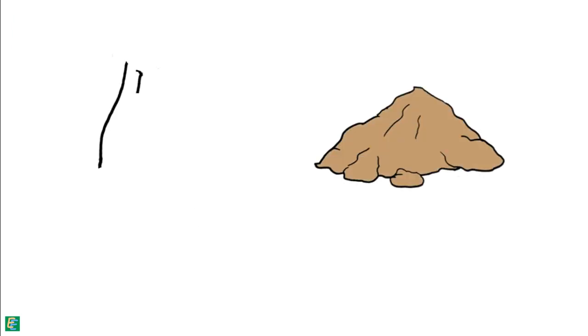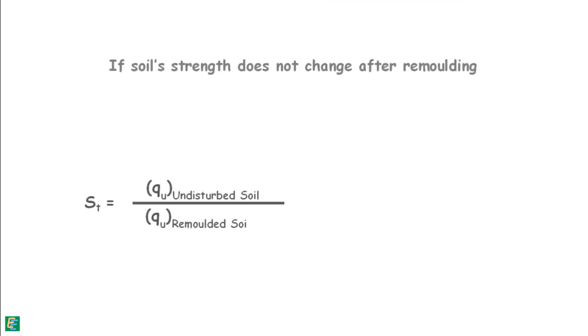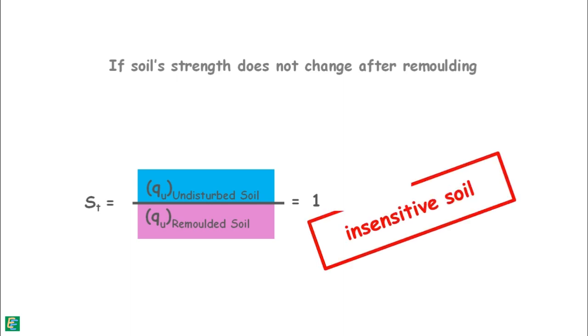If soil's strength does not change after remolding, then compressive strength of undisturbed soil and remolded soil being the same, sensitivity of the soil will be equal to 1, and such soils are called insensitive soils.